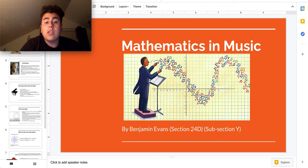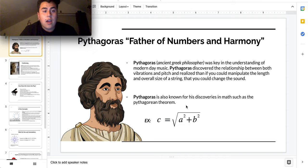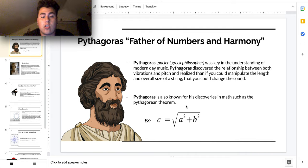So continuing on, Pythagoras is the father of numbers and harmony. Pythagoras was an ancient Greek philosopher who was keen in the understanding of modern-day music. Pythagoras discovered a relationship between both vibrations and pitch and realized that if you could manipulate the length and overall size of a string, that you could change the sound.